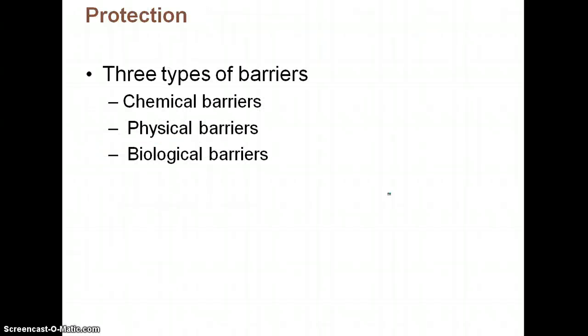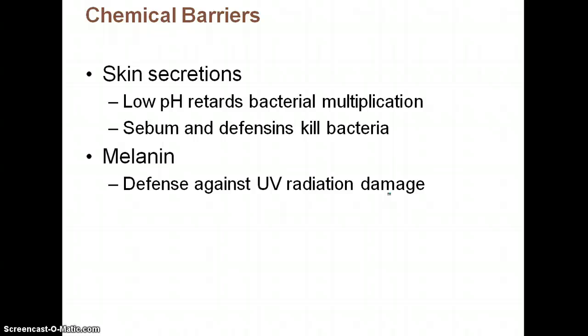There are three types of barriers that your skin helps protect from: chemical, physical, and biological. Chemical barriers include your skin secretions, which have a low pH that helps decrease the ability of bacteria to multiply. Sebum and sweat also contain antimicrobial agents that help kill bacteria. Melanin serves as a chemical barrier against UV radiation.